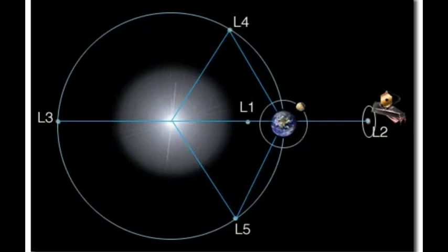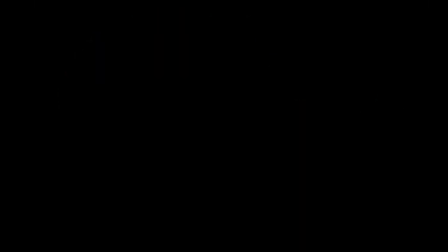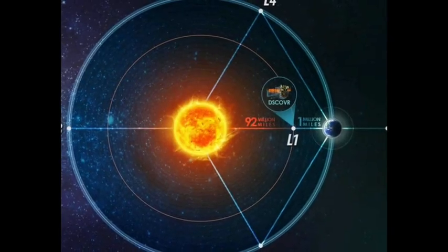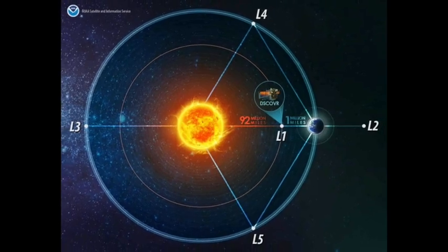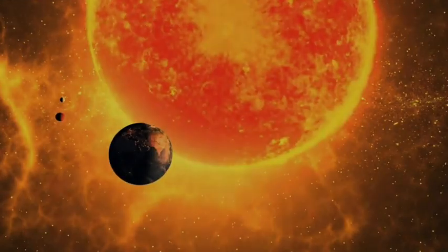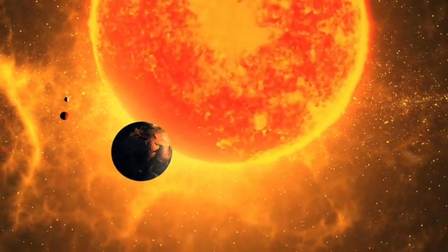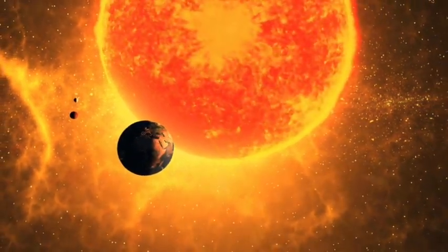However, while Lagrange points 4 and 5 are known to be stable, points 1, 2, and 3 are not. An object located at one of these points would eventually drift away due to the gravitational influence of other planets. It's like a ball sitting on a hill—a little push, and it will start to roll away.